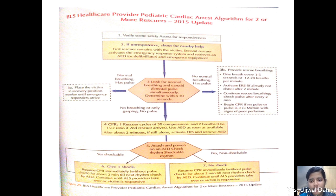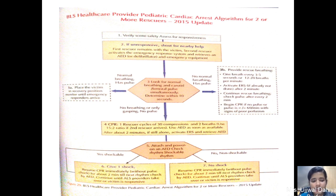If there is no normal breathing and no pulse, provide rescue breathing — one breath every 3 to 5 seconds, 12 to 20 breaths per minute — and activate the emergency response system. Continue breathing and check pulse every 2 minutes, then begin CPR. If there is no breathing, only gasping, and no pulse, carry out CPR rescue cycles at 30 compressions and 2 breaths. With 2 rescuers, the compression-to-breathing ratio is 15:2. After arrival of emergency support, attach AED and check the rhythm. If the rhythm is shockable, give shock and resume CPR immediately with no time lag. If the analyzed rhythm is non-shockable, do not give shock; resume CPR.